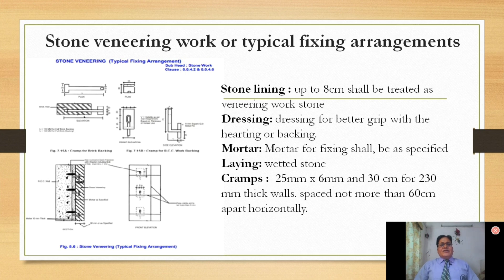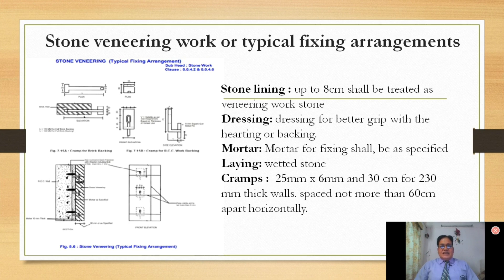Another form of stone work is the typical fixing arrangement, also known as stone veneering arrangement. These are certain tools, fasteners, and fixtures required — basically made up of wooden parts — used in stone masonry. The various works done include stone lining, dressing, mortar, laying, and cramps. For a 230 mm wall, a cramp size of 25 mm × 6 mm × 30 mm is sufficient, and as wall thickness increases, the cramp dimensions should be increased accordingly.